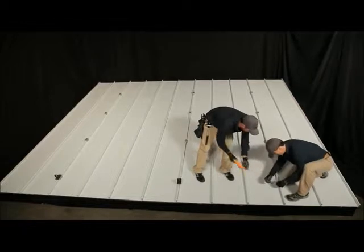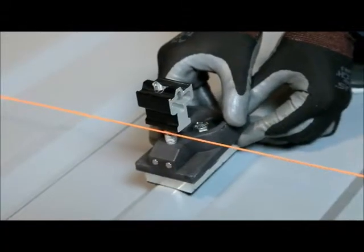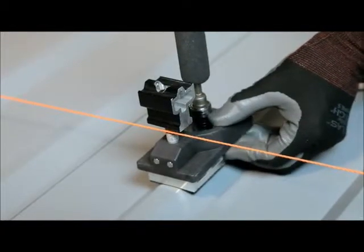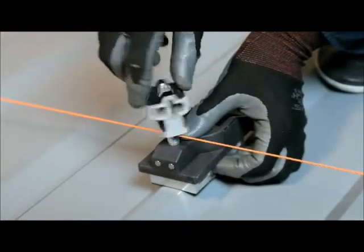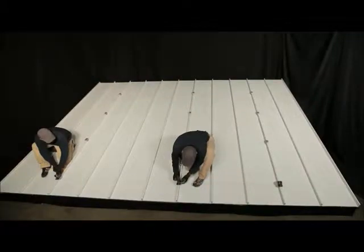Install the eastmost and westmost leveling feet first, and then run a string line between them. Install the remaining front row leveling feet using the string line to ensure that the front row is straight and the rockets on the top of the leveling feet are level.